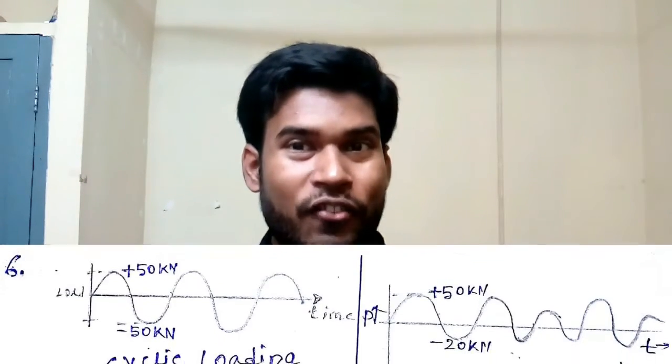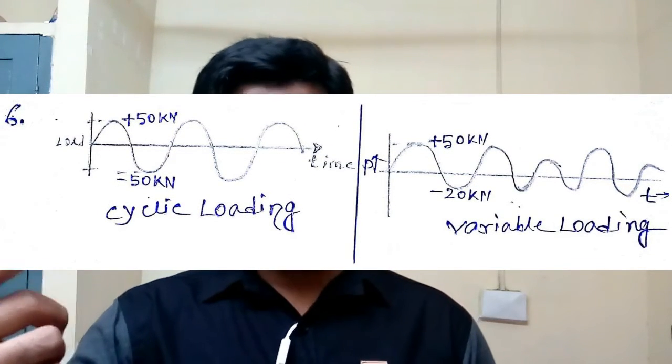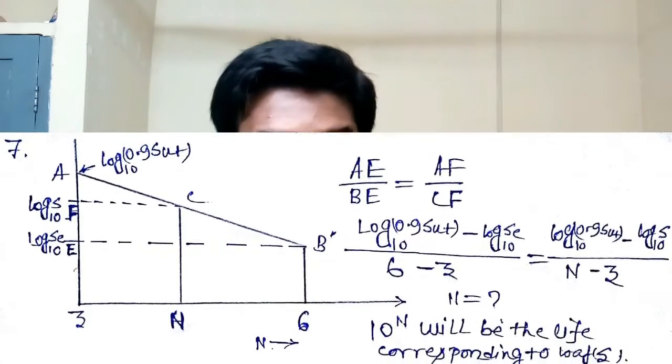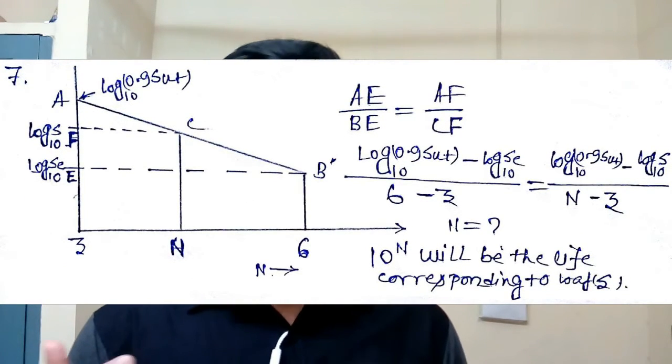The other type of dynamic loading is cyclic loading, variable loading, or reversal of loading. In cyclic loading, the load varies — sometimes it becomes +50 kN, sometimes -50 kN. It may also vary like +50 to -20 kN, which is variable loading. In design for cyclic loading, we consider the S-N diagram, where S is for strength and N is for number of revolutions. From that curve using interpolation we can find the stress for a particular life.